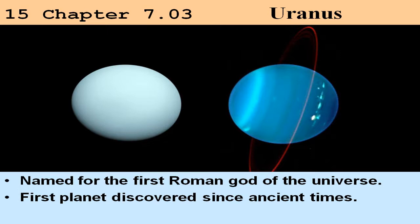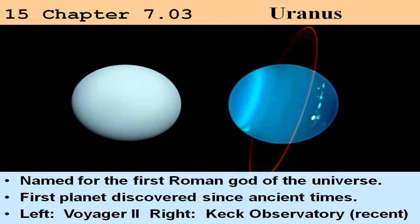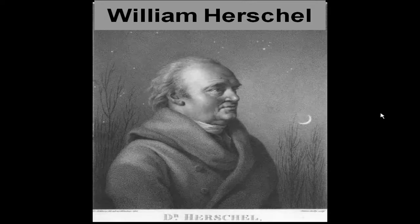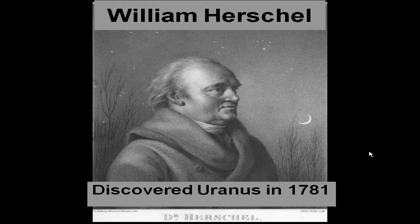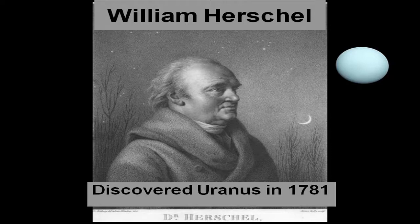It's the first planet discovered since ancient times. The picture on the left was taken by Voyager 2 in 1986. On the right is a recent picture taken by the Keck Observatory, and you can see that the appearance of Uranus has changed since more than 20 years ago. This is not due to a photographic problem, because Voyager was right there at the planet. William Herschel discovered Uranus in 1781.